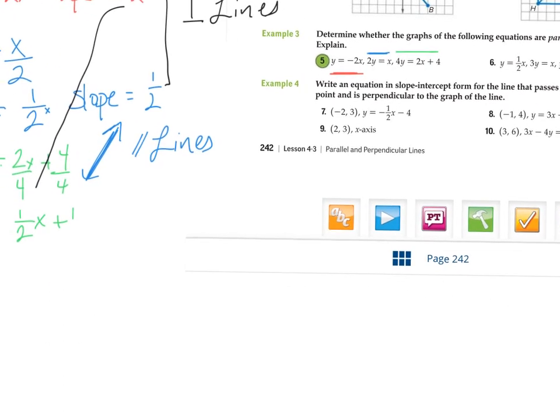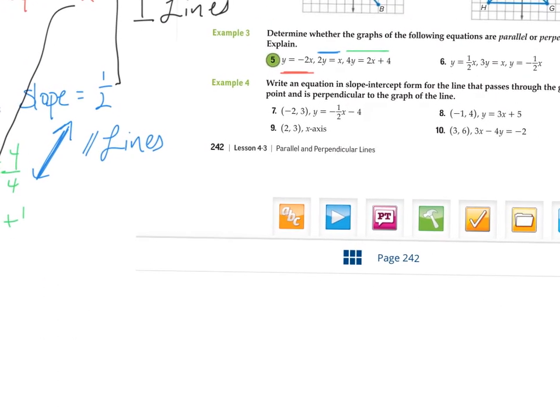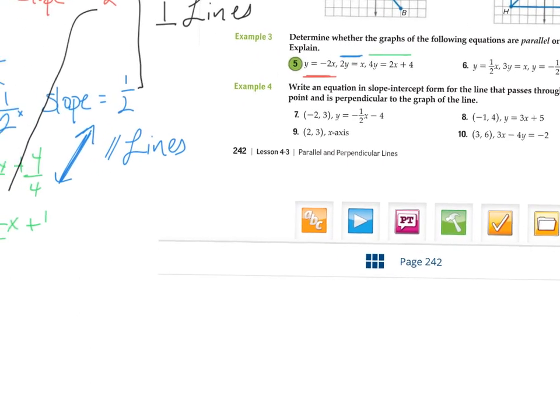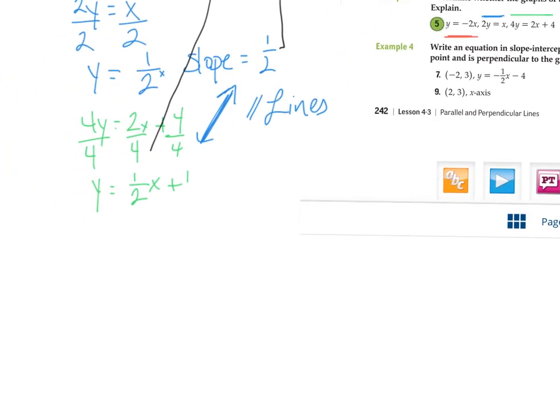Let's check out number seven. It says write an equation in slope intercept form for the line that passes through the point and is perpendicular to the given graph. Okay, so on number seven, we will, we can do that one first. I'll put seven over here. We know we're going to go through the point negative two, three. And we know the slope of the given line is negative one half. So I want the opposite reciprocal of that because remember, I want a perpendicular line. So that would be two. So two is the slope that I want.